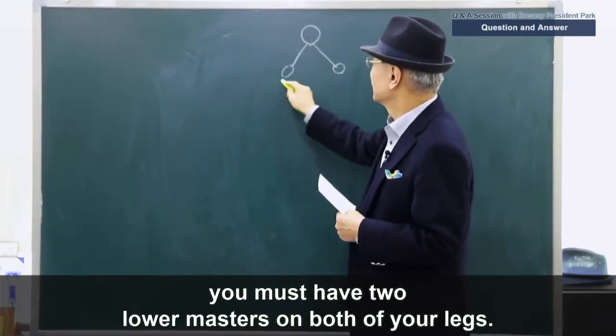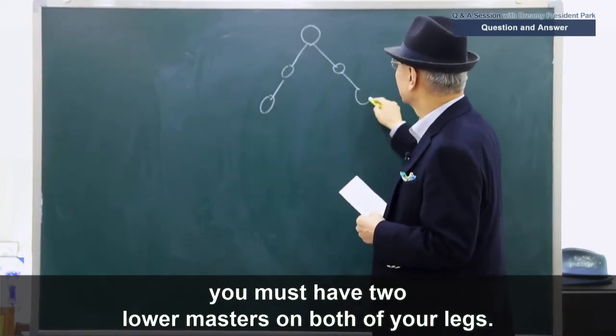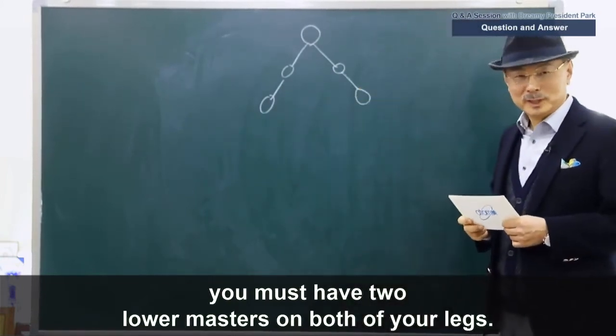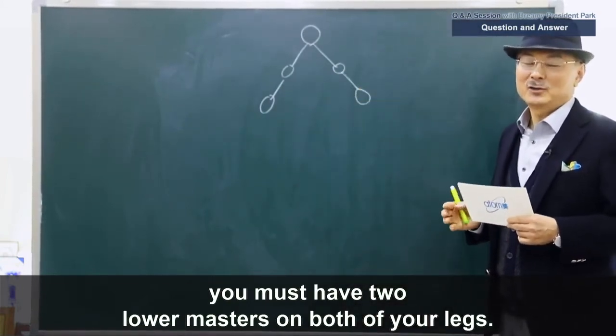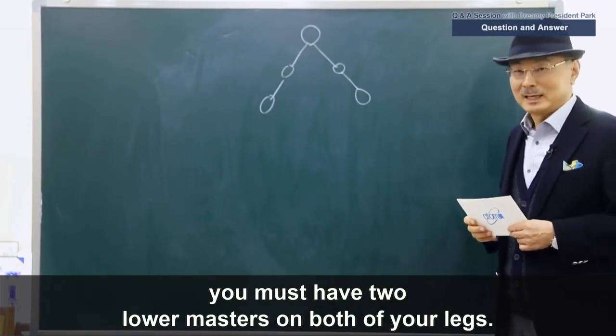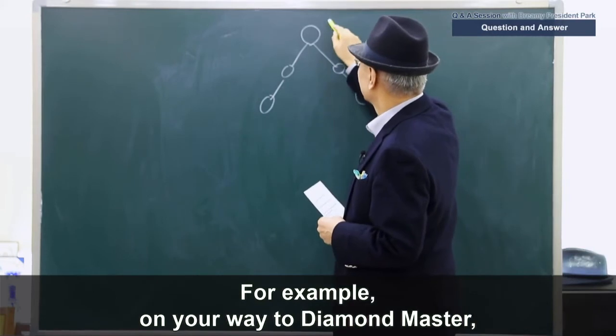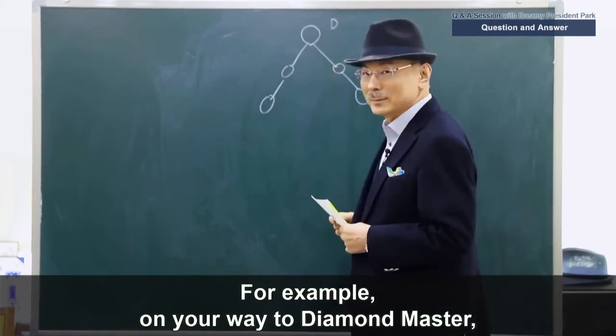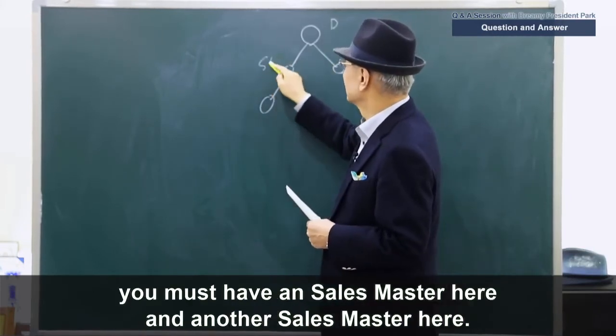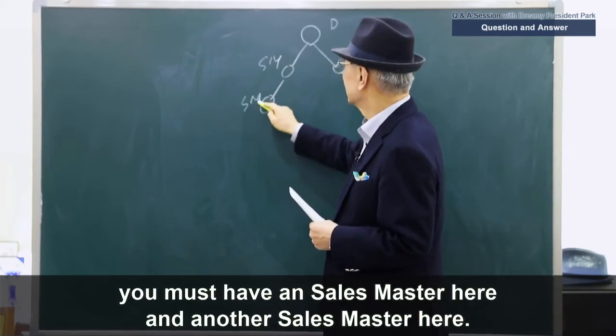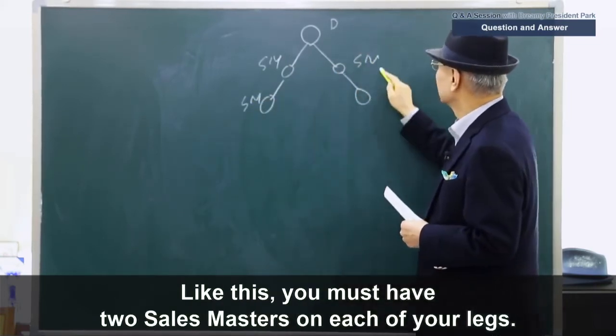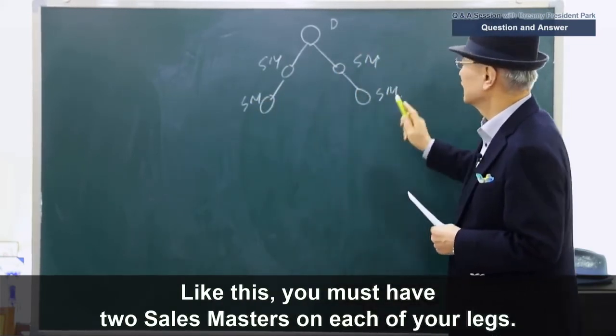You must have two lower masters on both of your legs. That's really the smartest way to go about this. For example, on your way to Diamond Master, you must have a Sales Master here and another Sales Master here. And like this, you must have two Sales Masters on each of your legs.